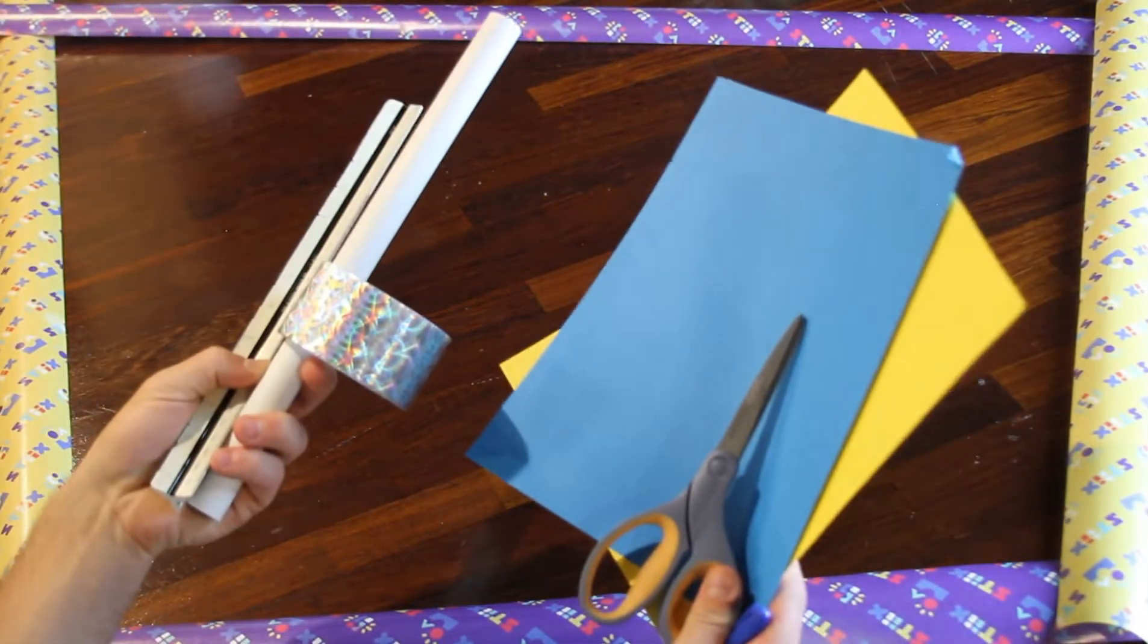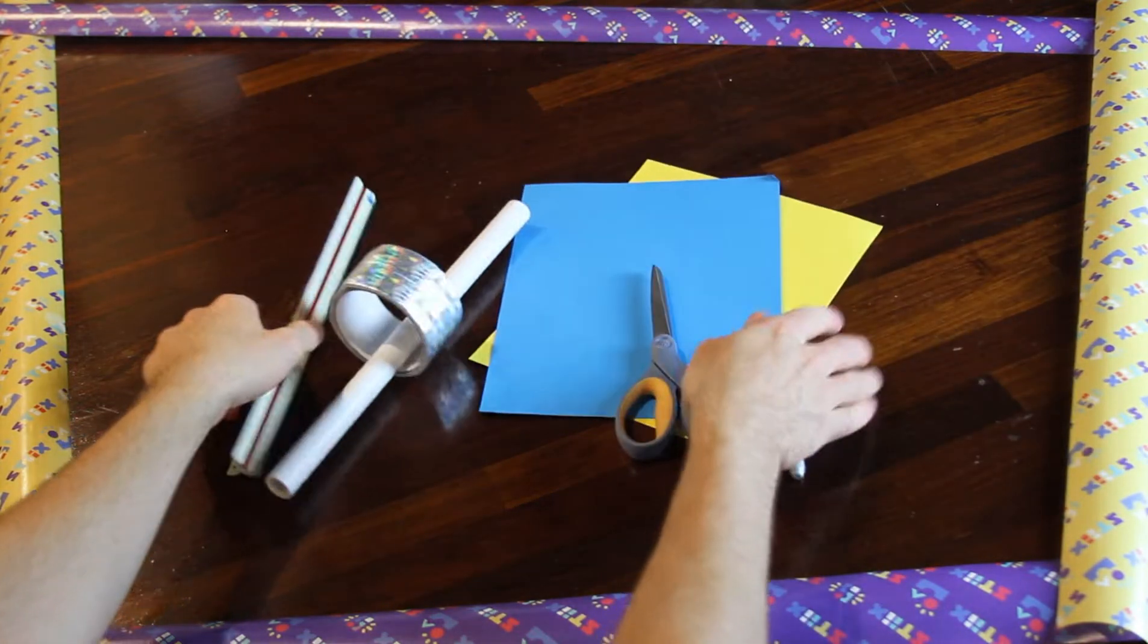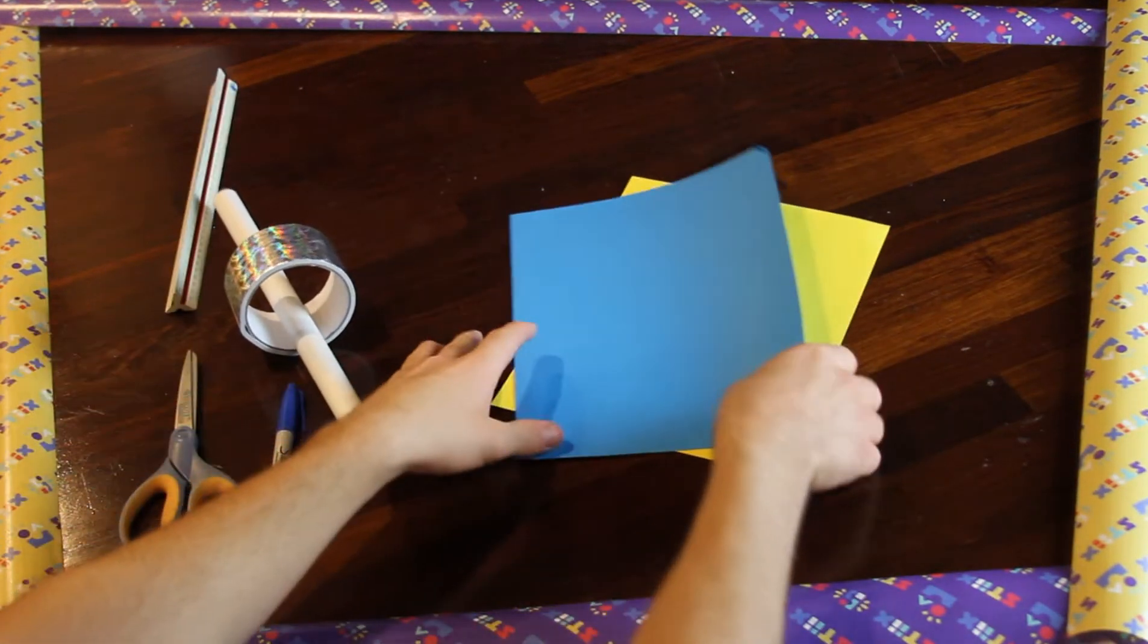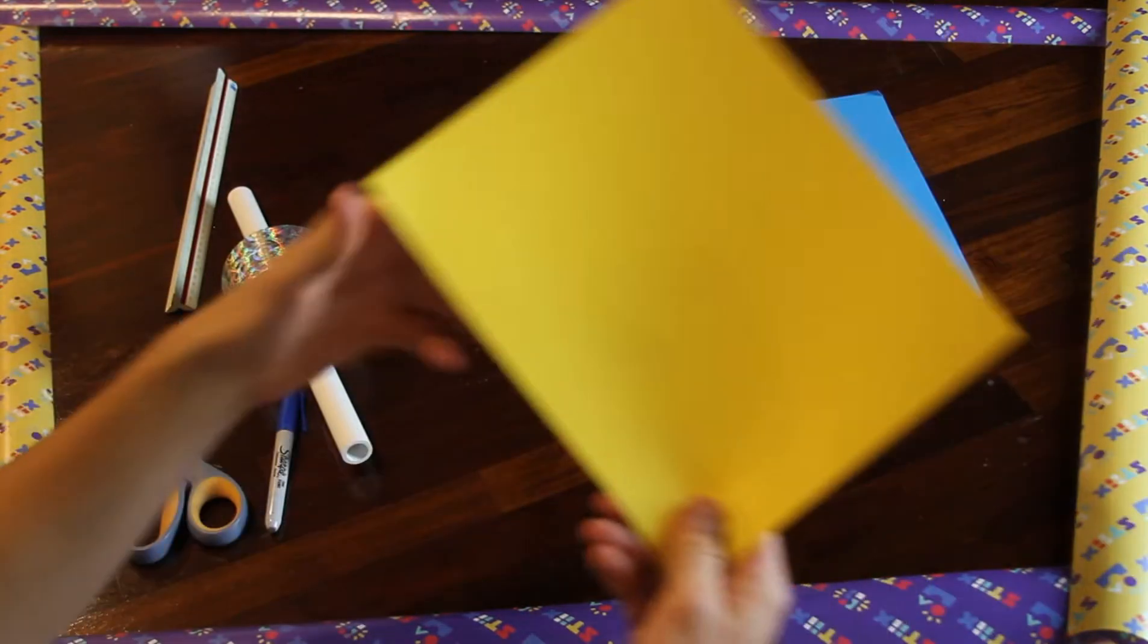Here are some of the materials you're going to be working with. It's nothing crazy, but we do give you enough to make multiple rockets. Step number one is to choose which colored paper you want your body of your rocket to be made out of, which is also called the fuselage.